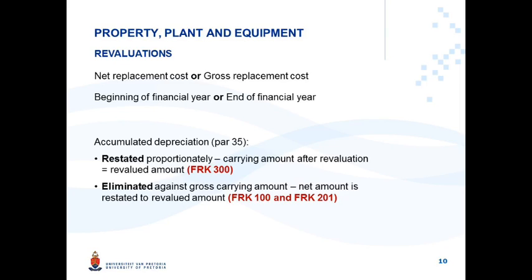Referring back to paragraph 35 on what to do with accumulated depreciation at the date of revaluation: you eliminate the accumulated depreciation against the gross carrying amount of the asset. The journal entry is: debit accumulated depreciation (the amount currently applicable to that asset) and credit buildings cost price account. After this journal entry, the asset is carried in your books at a net amount, which is then revalued to the revaluation amount.